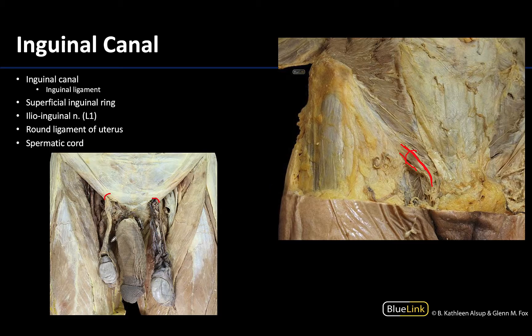On this individual you can see the spermatic cord exiting the superficial inguinal ring with the ilioinguinal nerve superficial to it. On this side the spermatic cord has been dissected to show the different components of the cord. We will discuss both the round ligament of the uterus and the spermatic cord in more detail in the reproductive anatomy session.